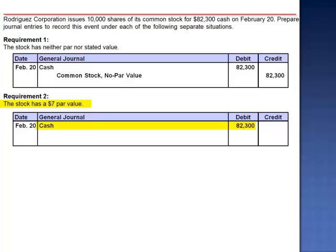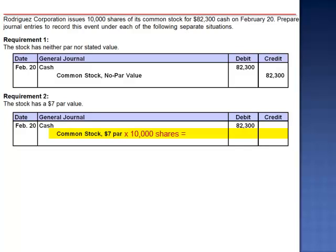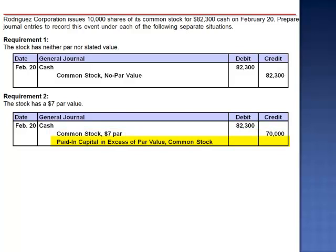Debit cash $82,300. But within the paid-in capital section of stockholders' equity, we segregate the investment. The par value of the 10,000 shares goes into the common stock $7 par account. $7 par multiplied by 10,000 shares is $70,000. And the remaining $12,300 is credited to an account paid-in capital in excess of par value. The financial statement impact is the same as in requirement 1. Assets and equity increase by $82,300.